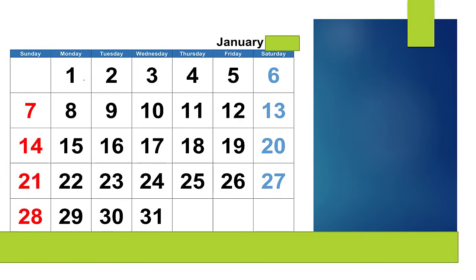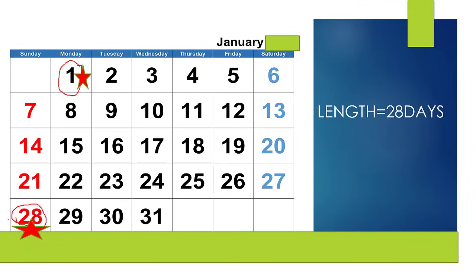Start counting on the first day of your cycle. For example, if you have periods on 1st January, mark this date and count up to the first day of your next cycle. For example, if your next cycle begins at 28th January, mark this date — so this cycle is of 28 days.